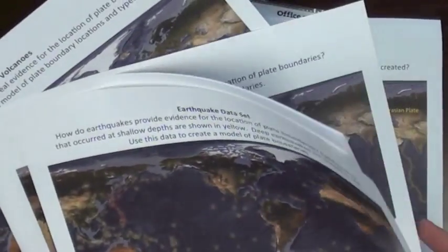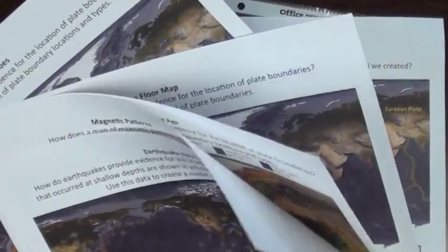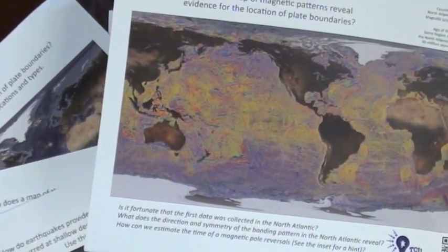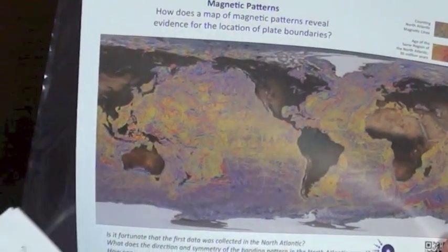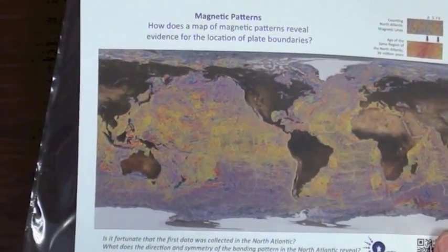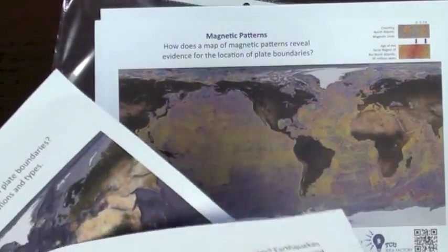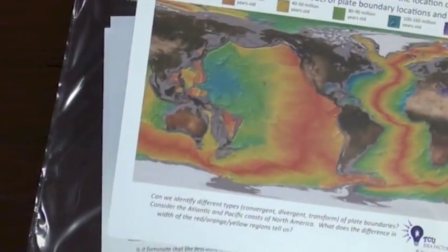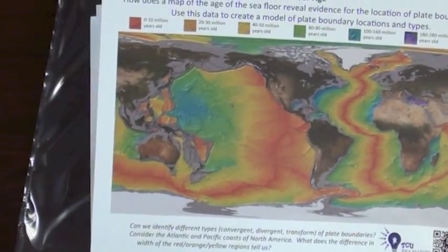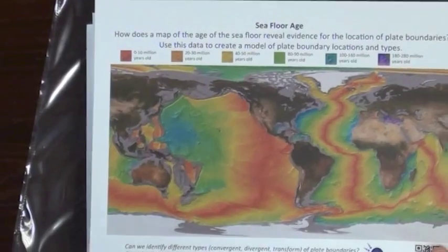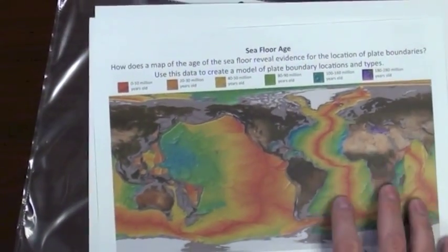The data sets vary in complexity and relevance to the task at hand. One data set, for instance, is the magnetic patterns. This is a very complex data set that we want to reserve to the end of our discussion. It won't necessarily help us build our model, but will allow us to refine it. Seafloor age is a terrific data set. The plate boundaries here are actually very well identified as red divergent boundaries. We're going to save this towards the end too. I'm going to put that deeper in my stack.